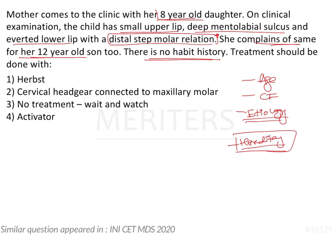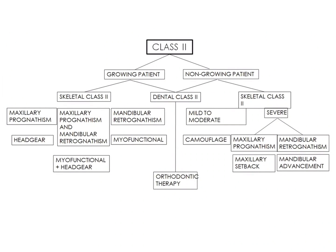Now we have to identify the treatment protocol for this patient. Whenever there is a Class II case, first you need to know whether the patient is a growing or a non-growing patient — because when the patient is still in the growing stage, you can intercept or perform some sort of growth modification. The second important thing to note is whether the malocclusion is a skeletal defect or a dental defect, as this is going to alter the treatment plan completely.